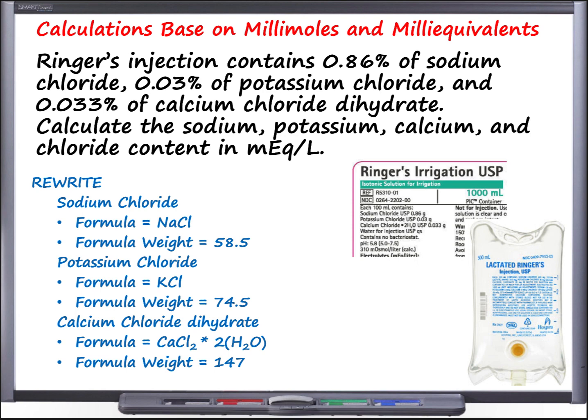Years later, a physician named Alexis Hartman determined that by adding lactate to the solution, it made it much more suitable for use in pediatric patients. Lactate is a chemical produced by our muscles during exercise and is a natural part of milk. With the addition of lactate, the solution became known as lactated Ringer's. Lactated Ringer's is typically used to replace fluid, blood, or both, and is frequently used when a large volume of fluid must be given initially — known as fluid resuscitation.